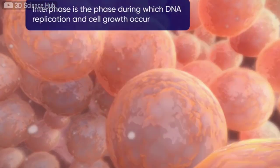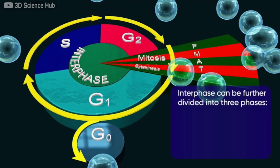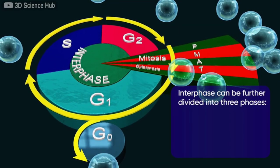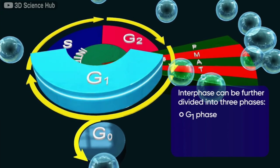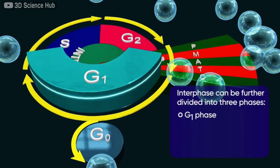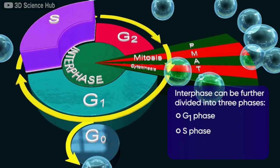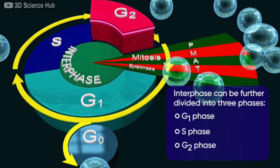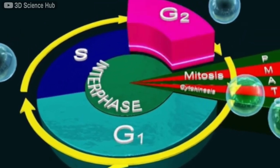The interphase can be further divided into three phases, namely: G1 phase or gap 1 phase, S phase or synthesis phase, and G2 phase or gap 2 phase.